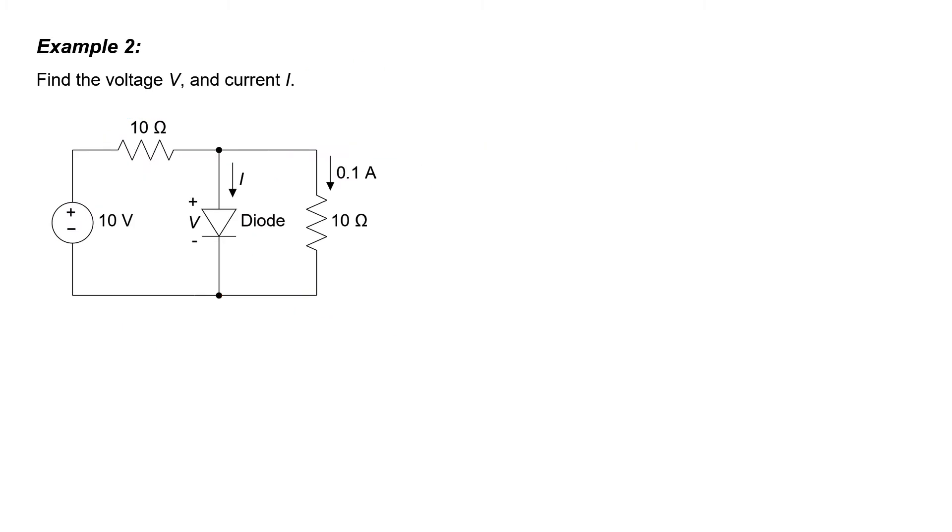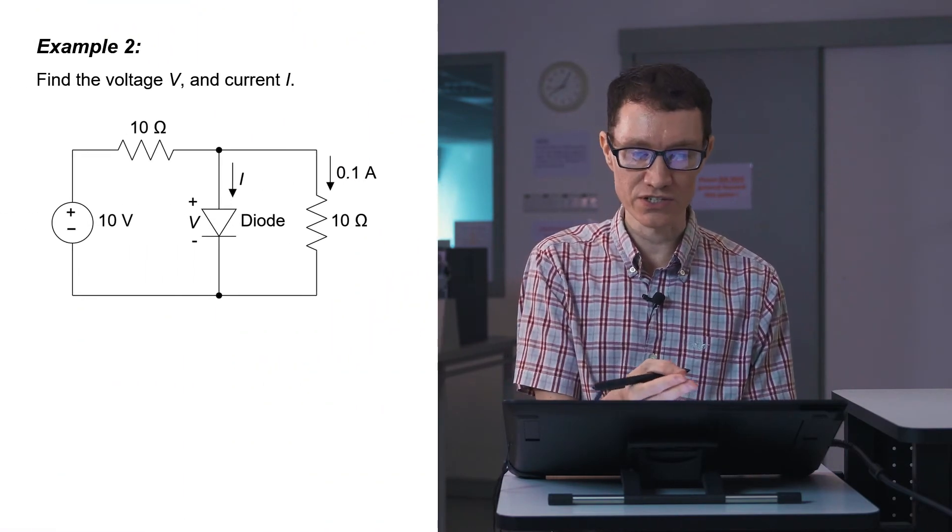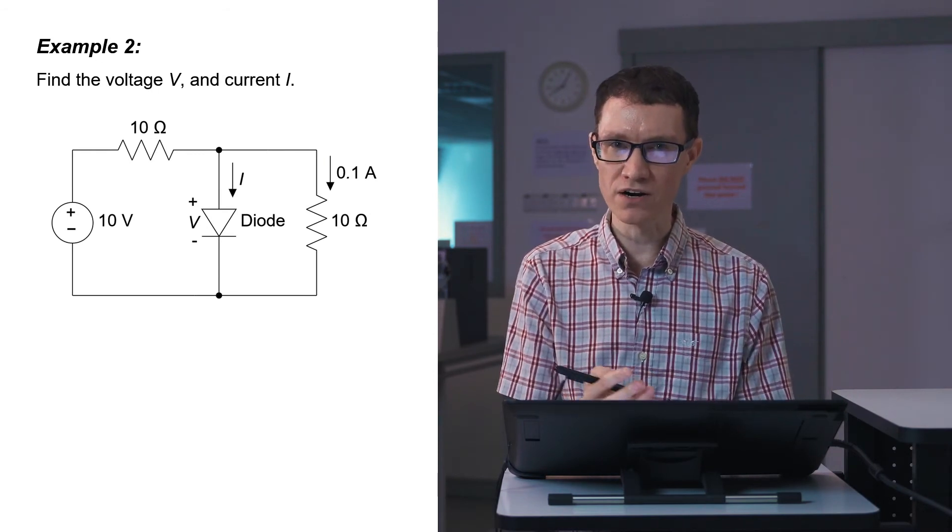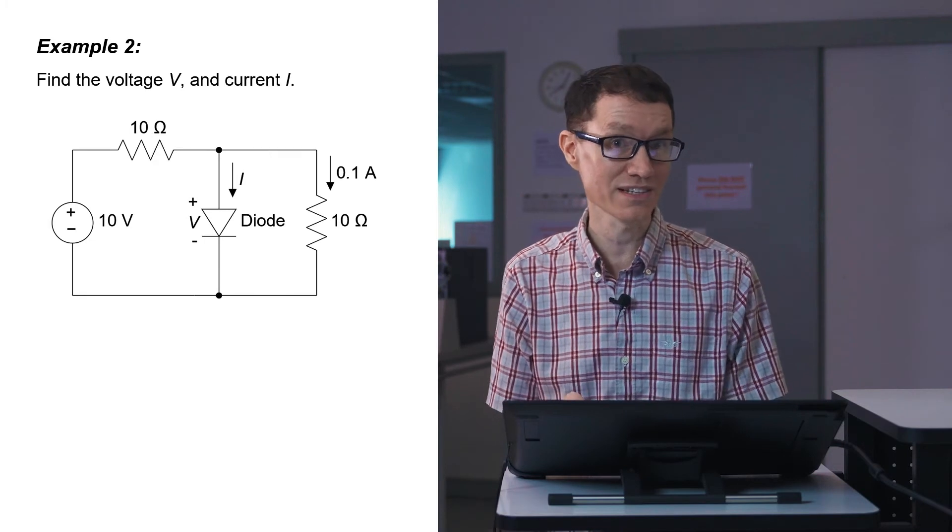In example two, we're given a diode. Now a diode is different than a resistor. A diode does not have the relationship V equals IR. One of the things I've noticed is that a lot of beginners in electronics have a tendency or an instinct to write V equals IR no matter what circuit element that they're dealing with. And one needs to remember that that is not correct. It's only correct when you have a resistor. This is a diode, not a resistor.